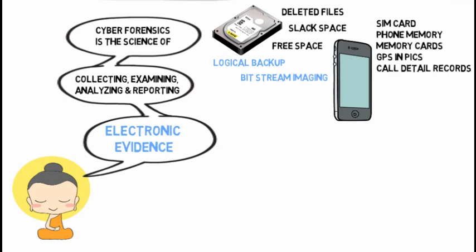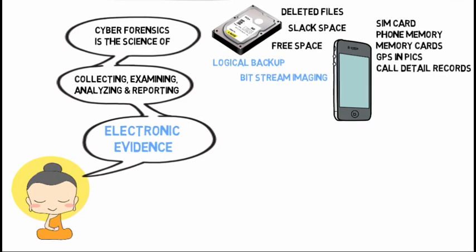Call detail records are used in many cases for conventional crimes such as chain snatching, murder, house breaking, and robberies. In cell phone forensics we usually deal with iOS, BlackBerry, Android, and Windows Mobile.